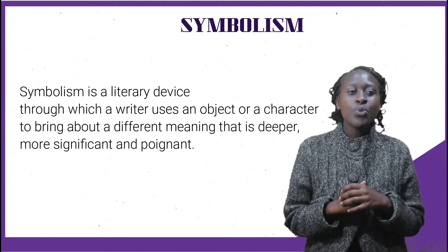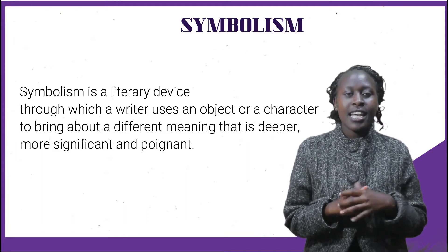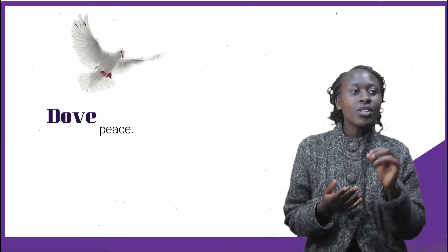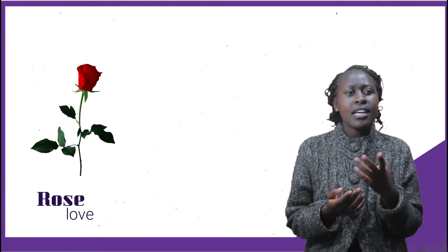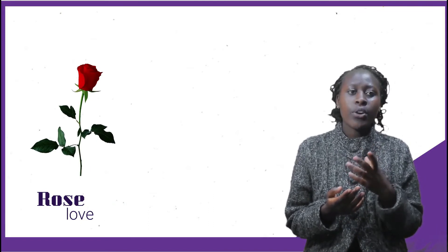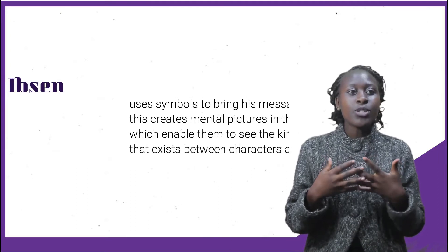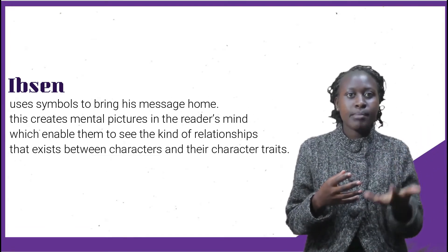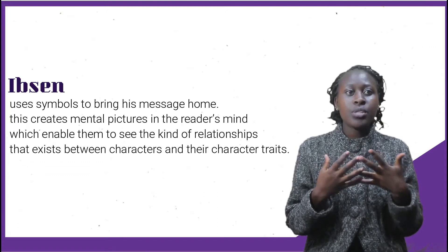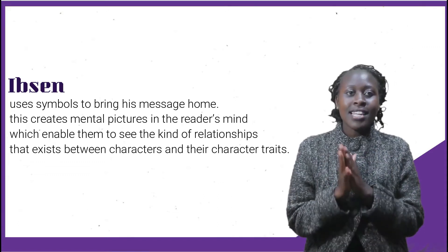Symbolism is a device through which a writer uses an object or a character to bring about a different meaning that is deeper and more significant. Outside of literature we encounter symbolism in everyday life. For example, the dove is always a symbol of peace, whereas a red rose or the color red stands for love or romance. In A Doll's House, Ibsen uses symbols to bring his message home, creating mental pictures in the reader's mind.